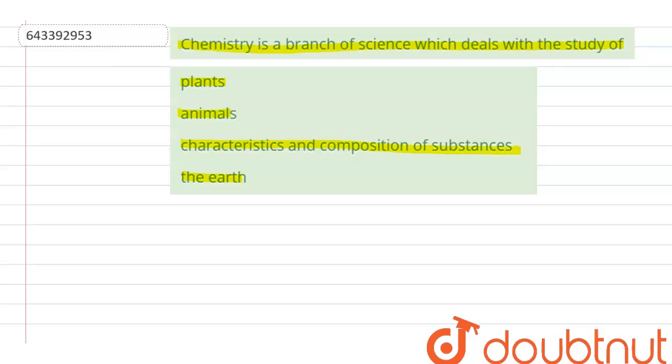If we talk about the options, the first option is plants. Plants is basically dealt in the study of life sciences, and the branch is known as botany. The next option is animals. Animals is also in life sciences, and the branch is studied under zoology.